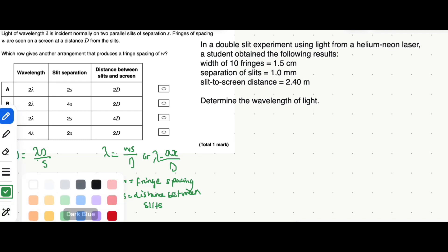It's different for different specifications which is why I wrote out two equations here. The only difference between the equations is that A stands for W, which is also fringe spacing.